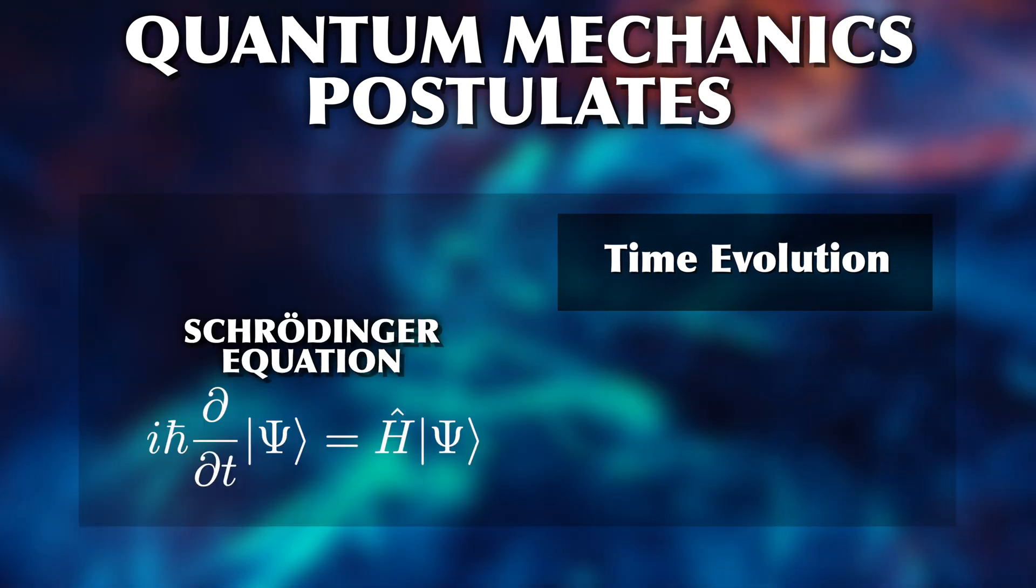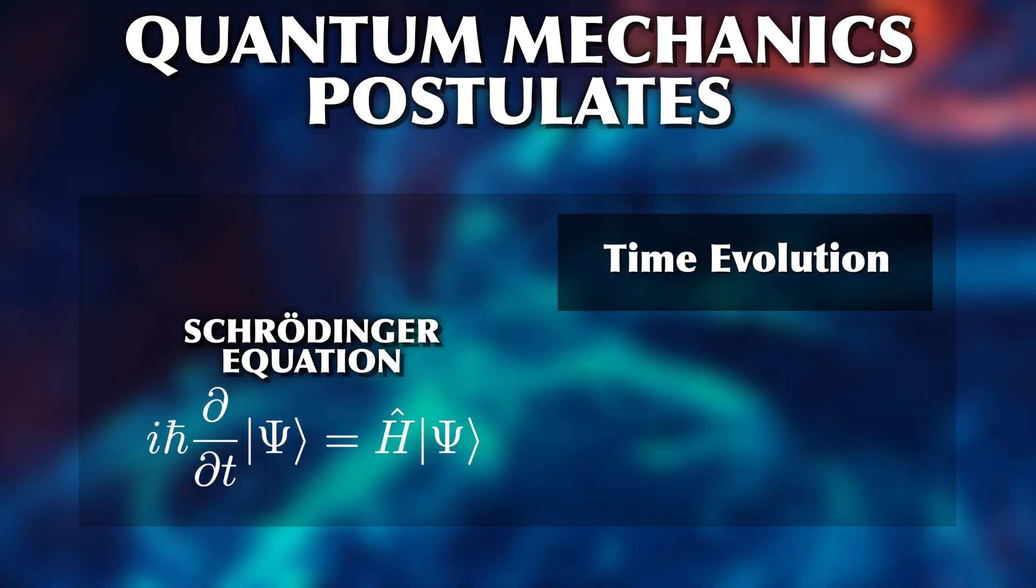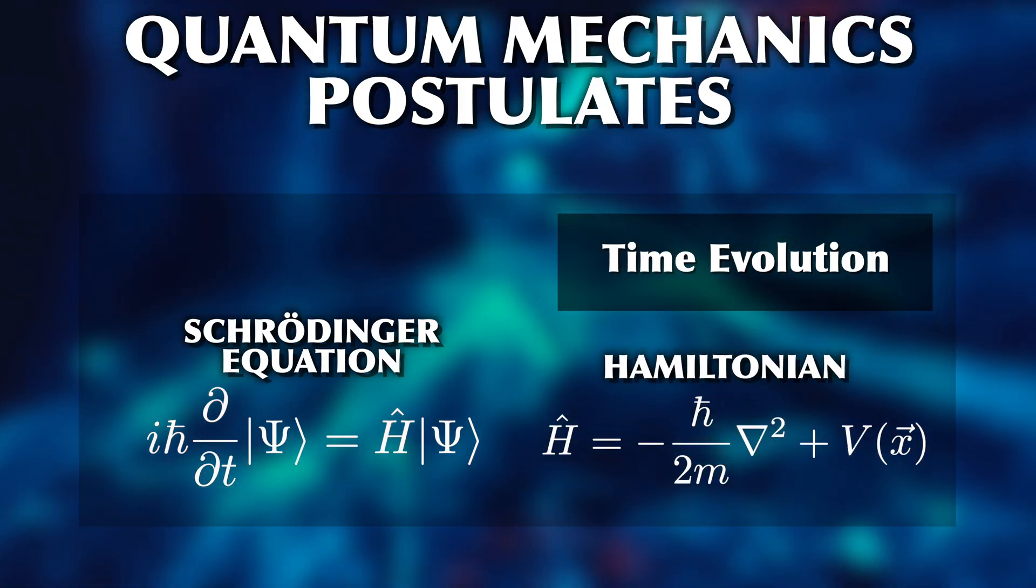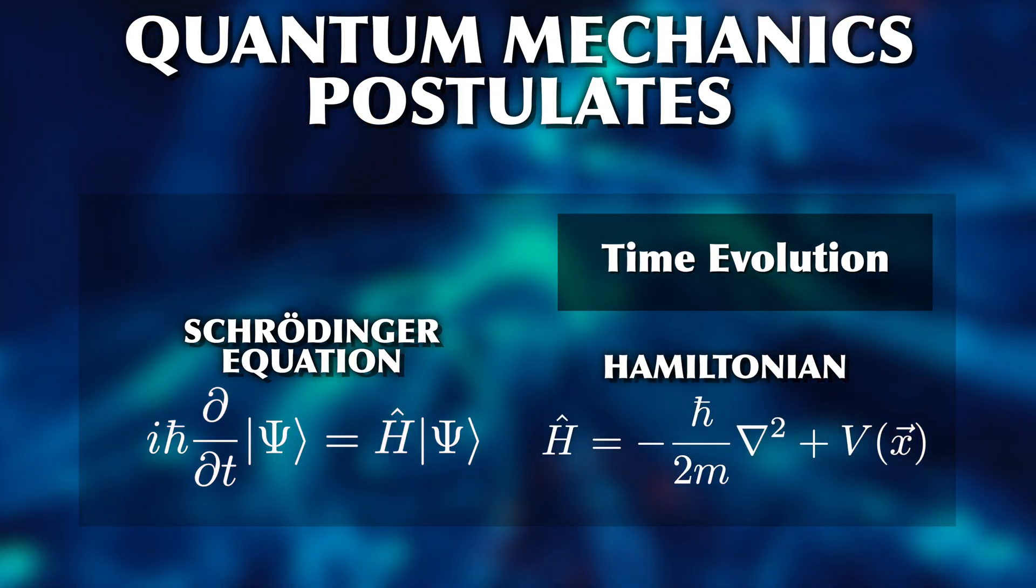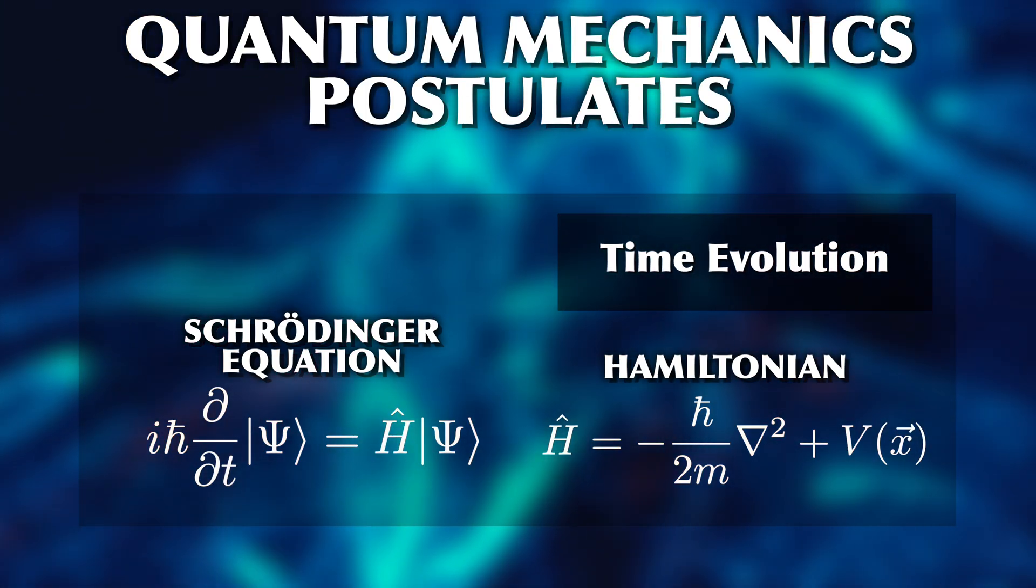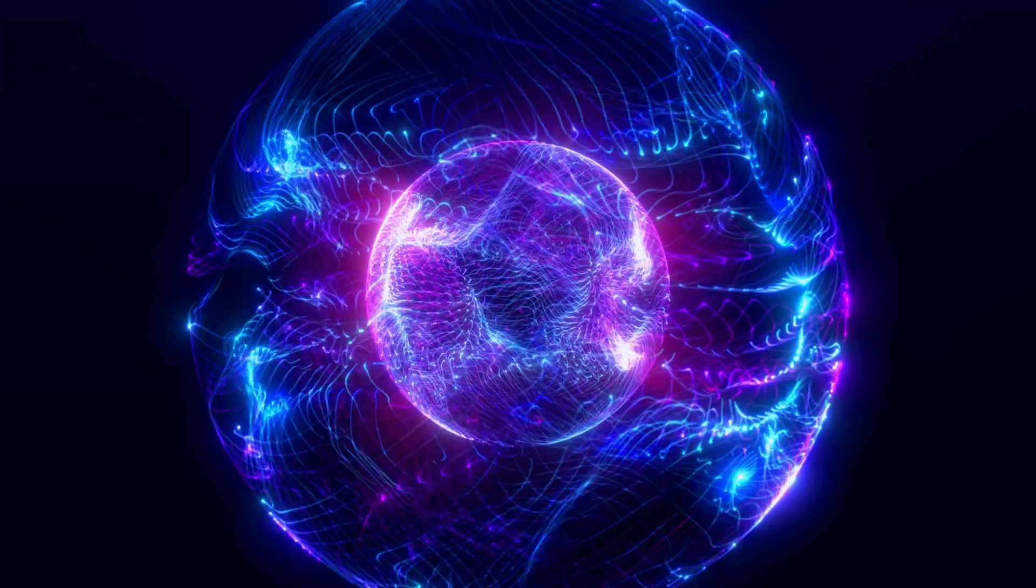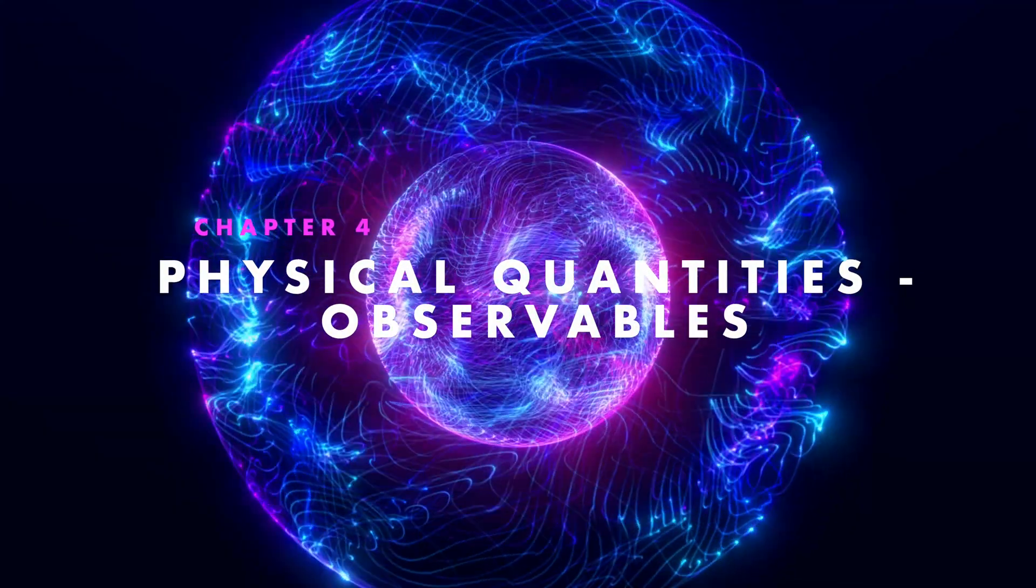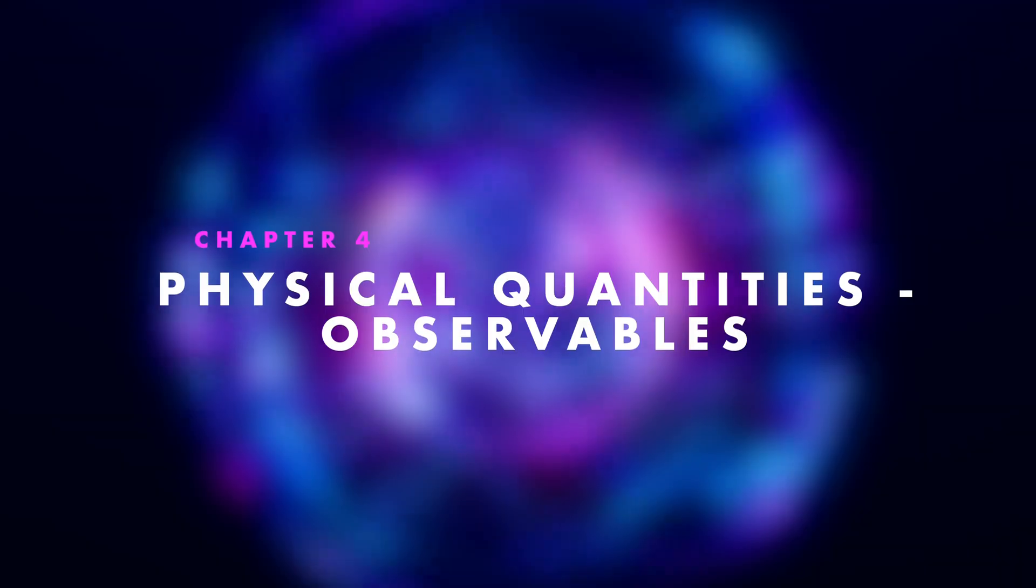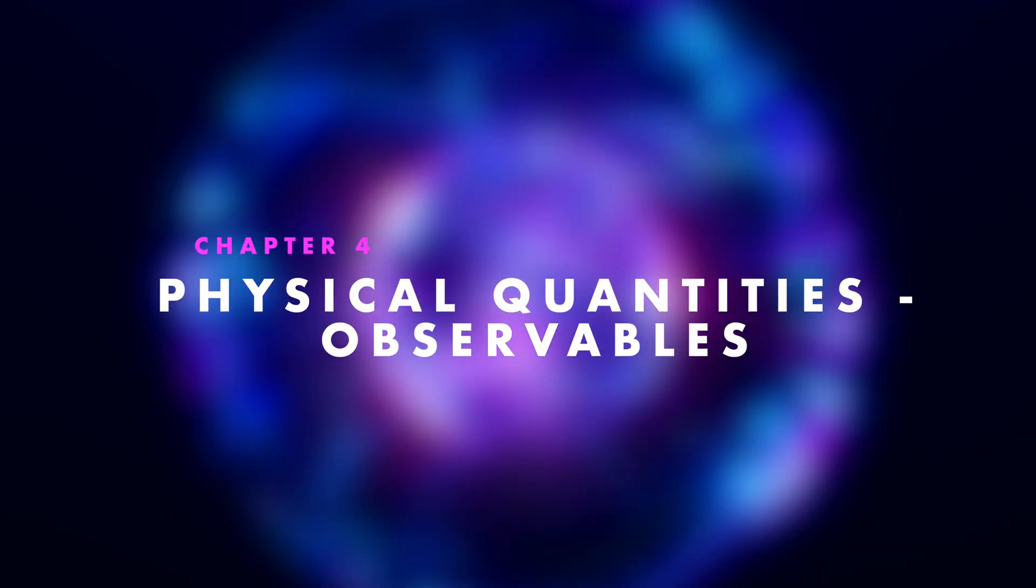Time evolution is given by the Schrödinger equation. When we know the current state of a system and the dynamics of the system given by the Hamiltonian, we can use the Schrödinger equation to calculate any future state of the system.